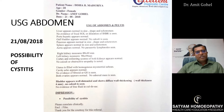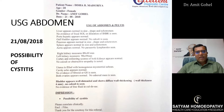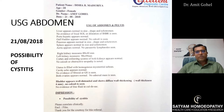On USG abdomen, the kidneys were normal — both right and left kidneys, with no calculi. The bladder wall was distended and diffusely thickened. So the possibility of cystitis was confirmed.